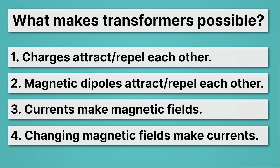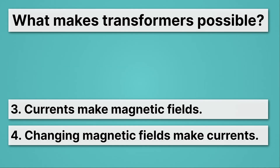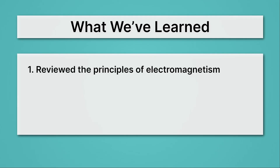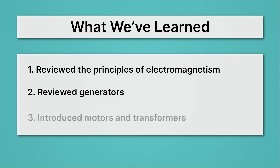The correct answer is three and four, because a transformer has two sides. On one side, a current makes a magnetic field, and on the other side, a magnetic field makes a current. Let's review what we've learned: first, we reviewed the principles of electromagnetism; then we reviewed generators, which make electricity from motion; then we introduced motors, which do the opposite — they make motion from electricity — and transformers, which change the voltage of electrical currents.